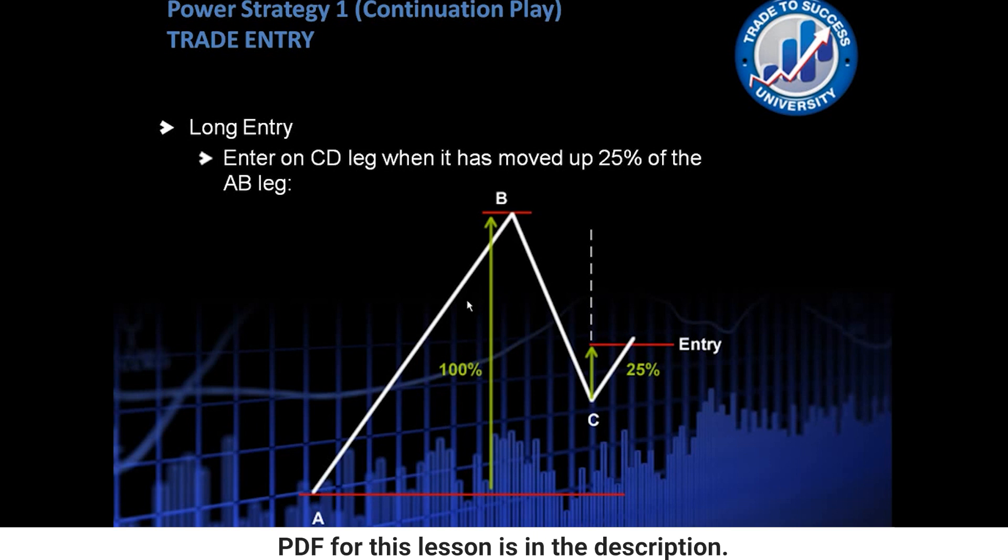So let's say the A to B leg was 100 pips. We would want the price to rise 25 pips up from point C for us to be entering. And obviously we are entering for a long position here.